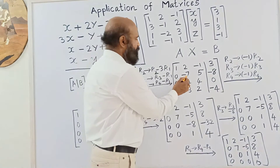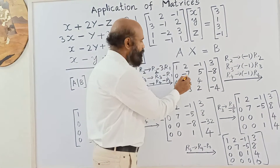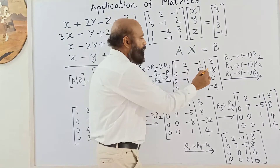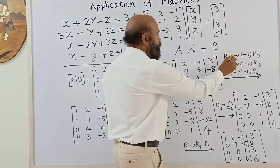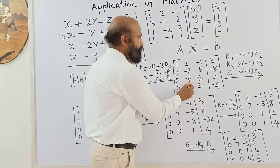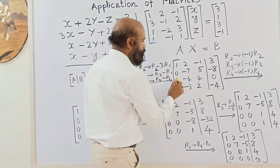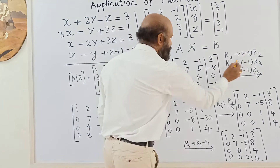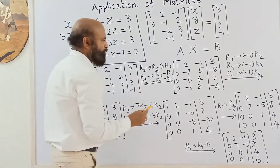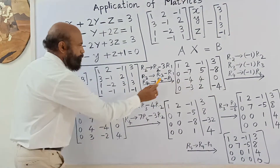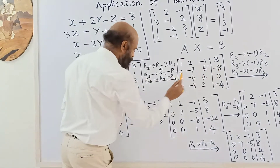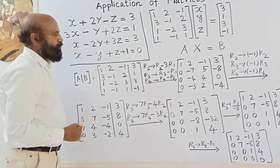Next, some rows have negative leading entries, so we multiply by -1 to make them positive. We multiply the second row by -1, the third row by -1, and the fourth row by -1. All signs change: -7 becomes +7, +5 becomes -5, -8 becomes +8, and so on.